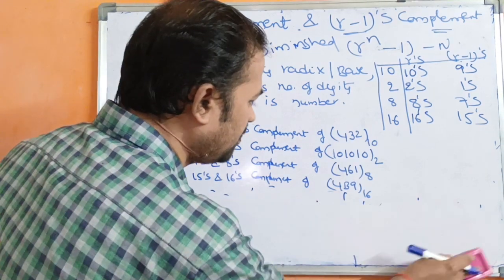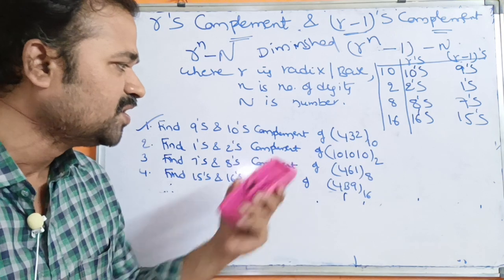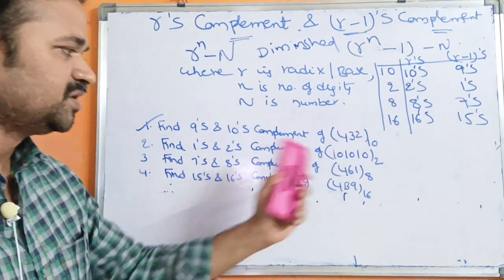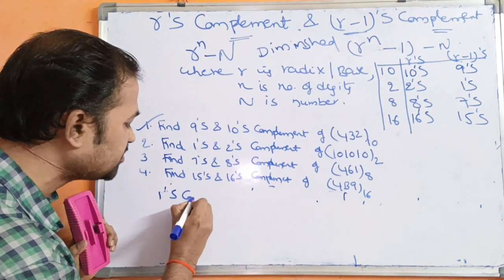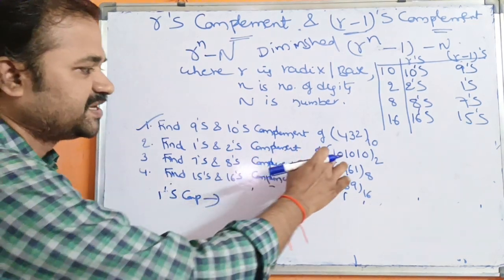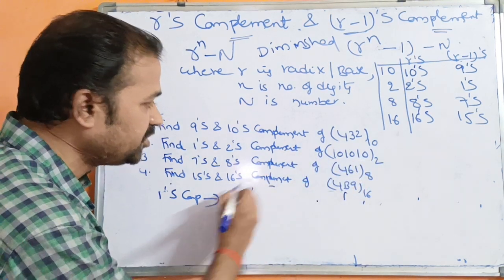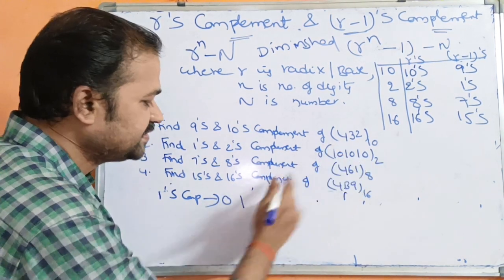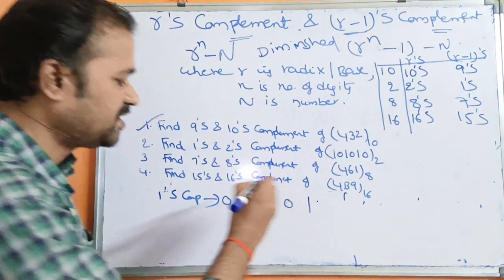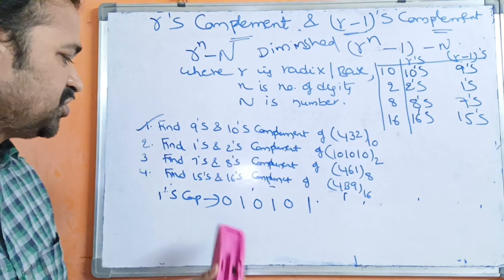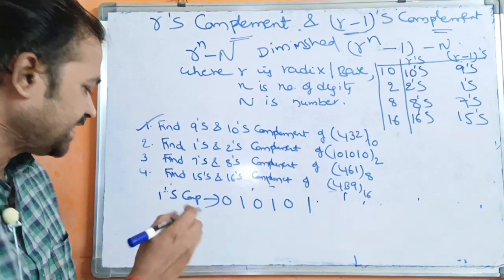Second problem: find 1's and 2's complement of 101010. For 1's complement, 1's are converted to 0's and 0's are converted to 1's. So 101010 becomes 010101.